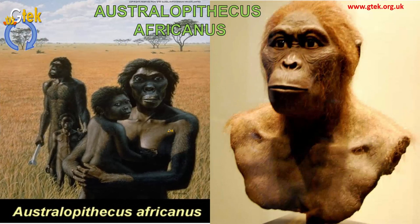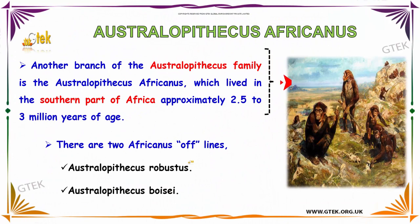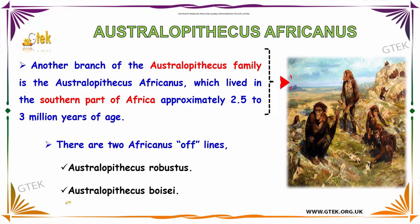Now let us talk about Australopithecus africanus. Another branch of the Australopithecus family is Australopithecus africanus, which lived in the southern part of Africa approximately 2.5 to 3 million years ago. There are two variants: the first is Australopithecus robustus, and the second is Australopithecus boisei.